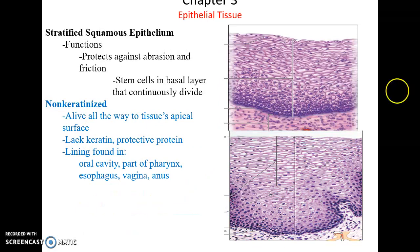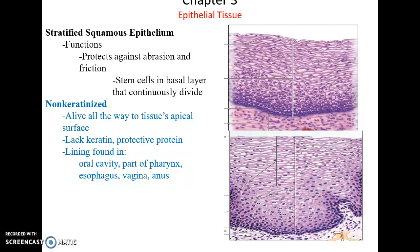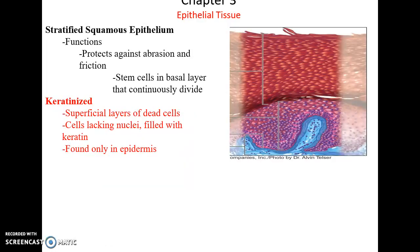Stratified squamous epithelium has many layers of cells, with the most superficial ones being very flat. Cells divide at the base and get pushed upward. Non-keratinized forms have all living cells and protect against friction; they are found in the oral cavity, pharynx, esophagus, vagina, and anus. Keratinized forms are very strong and tough, but as they become keratinized they die, so the cells near the surface are dead. Keratinized stratified squamous epithelium is found only in the epidermis.